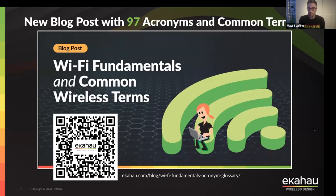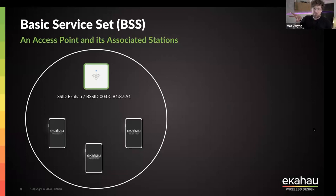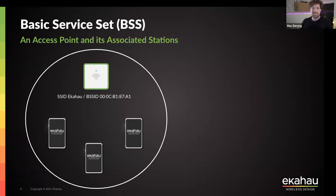Big shout out to Jacob and everyone else in the Echo marketing team for putting this together — it's a really fantastic resource. On that note, Mac, why don't you tell us about the first Wi-Fi acronyms we're going to be covering? Let's start with the very basic one. When you have your access point and you have your clients associated to the access point, this is called the BSS — Basic Service Set. That's BSS: Basic Service Set, AP, and adjacent clients.